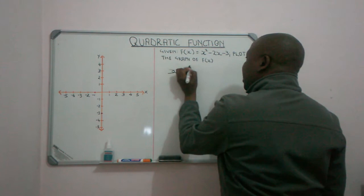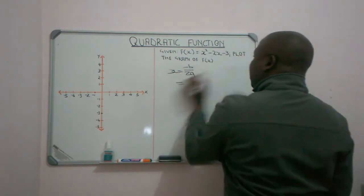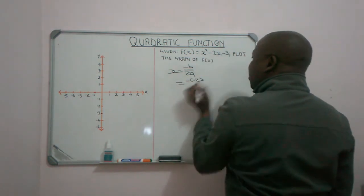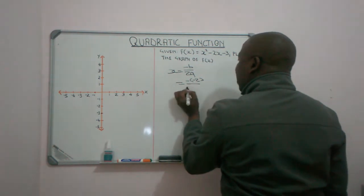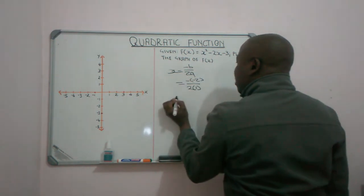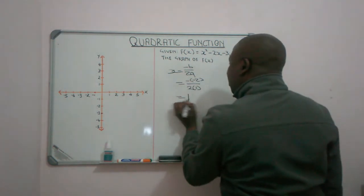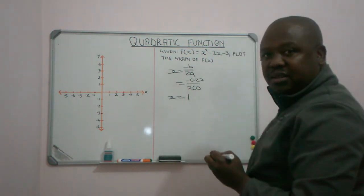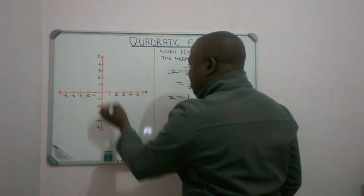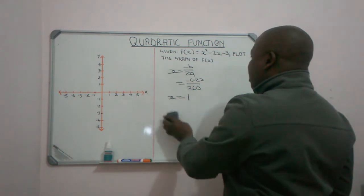x is equal to minus b over 2a. Our b is minus 2 and our a is 1. So x equals minus of minus 2 over 2 times 1 — negative times negative is positive — 2 divided by 2. We have x is equal to 1. That is our x coordinate of the turning point.